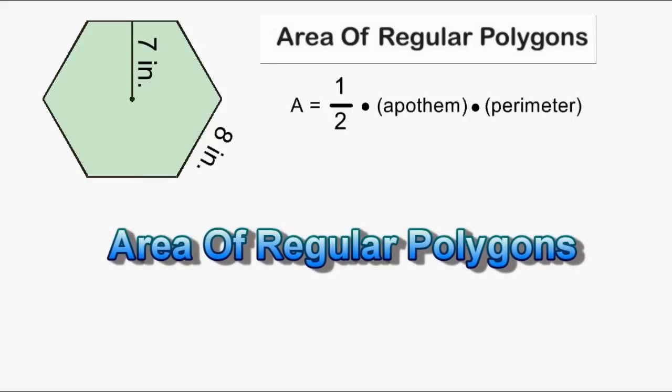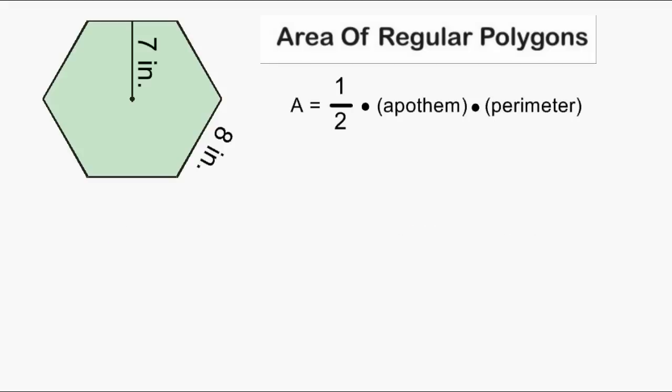To find the area of any regular polygon, multiplying one half by the apothem of our polygon by the perimeter of our regular polygon will give us the area of our regular polygon.